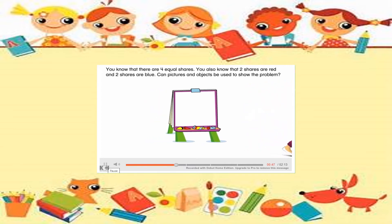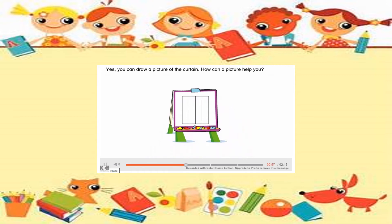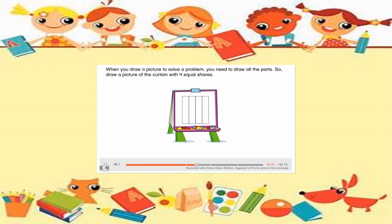Can pictures and objects be used to show the problem? Yes, you can draw a picture of the curtain. A picture helps you see how many shares are red and how many are blue. When you draw a picture to solve a problem, you need to draw all the parts. So draw a picture of the curtain with four equal shares, and color in the equal shares to match the problem.